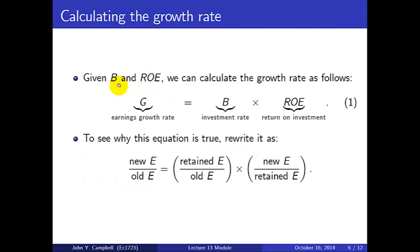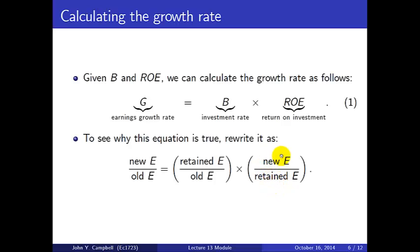Given those two numbers B and ROE, we can calculate the growth rate as their product. The growth rate G is the product of the investment rate and the return on investment. G is just new earnings divided by old earnings — it's the incremental earnings created by investment divided by investment, divided by old earnings. That in turn is retained earnings divided by old earnings, which is the investment rate B, times new earnings divided by retained earnings, which is ROE. So G equals B times ROE.